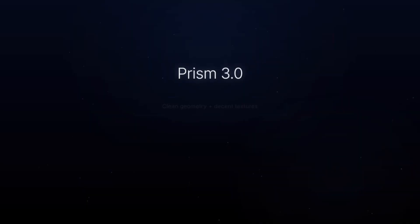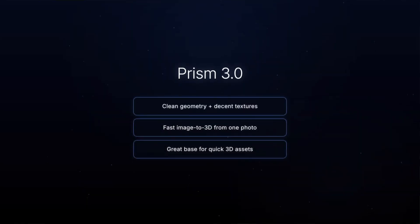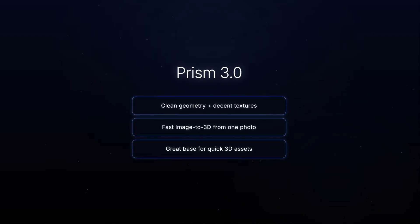Starting off with Prism 3.0 AI 3D Model Generator. This model gives you a balance between clean geometry and good-looking textures. The meshes are usable right away, and the textures look realistic enough for product shots, characters, or general 3D objects.